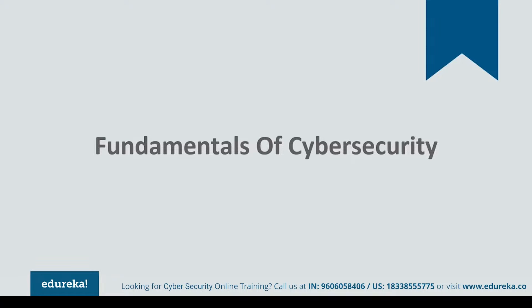Cyber security is a set of techniques and practices employed to protect data — but what are we actually protecting data from? We are protecting data from unauthorized access, unauthorized modification, and unauthorized deletion. These three terms correspond to what we know as the CIA triad in cyber security. CIA stands for Confidentiality, Integrity, and Availability.